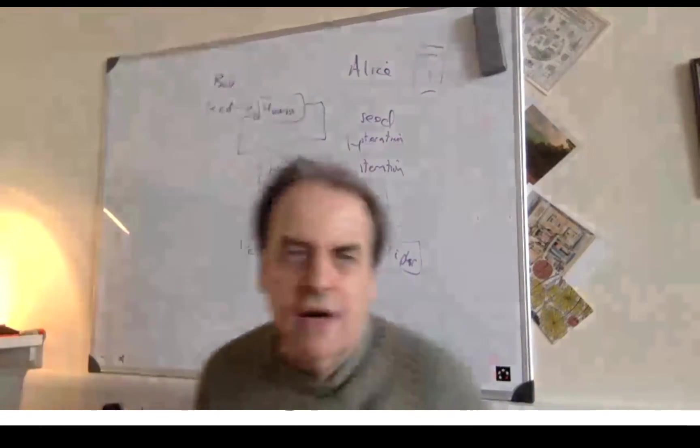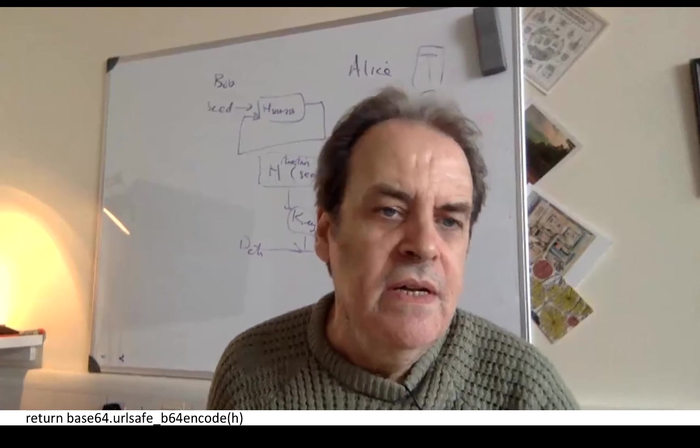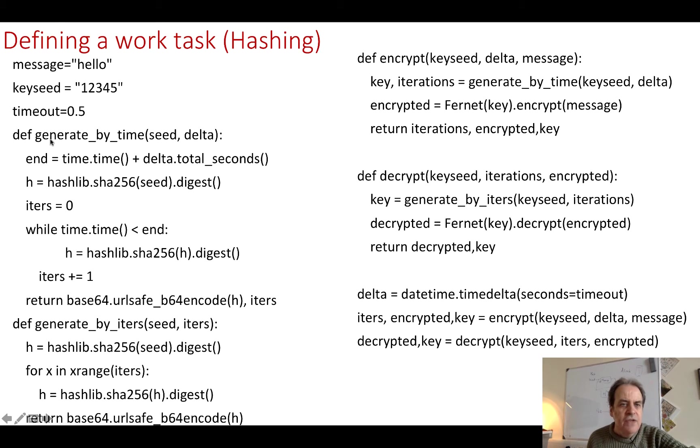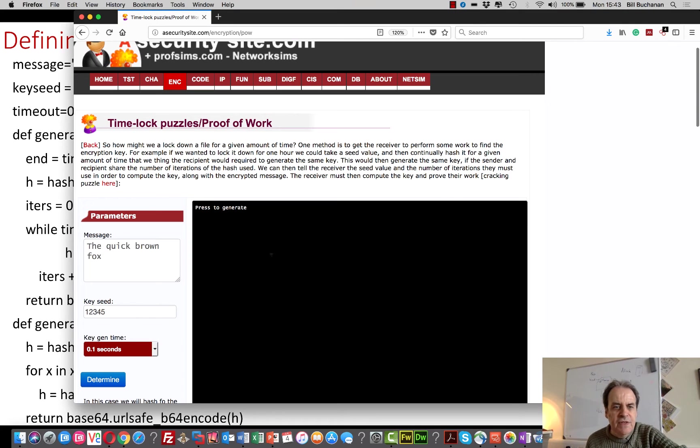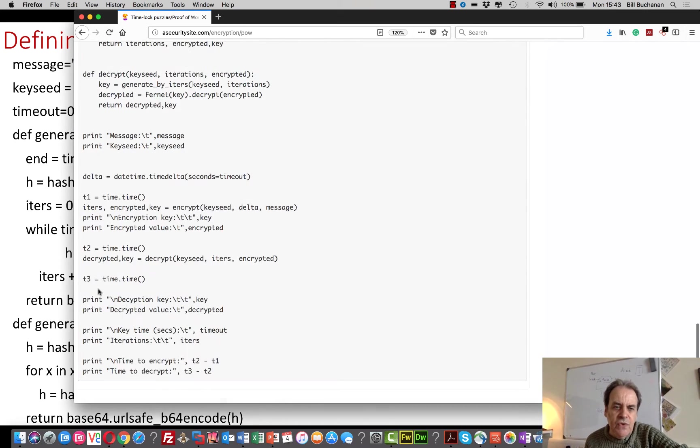That's our hashing method there, and here are some codes to implement this. In this case we derive a certain amount of time and we will generate a hash key by going around the loop until the timer finishes. This way we can actually find out the key and the time it will take Alice to compute the key. Then from there we can encrypt with our key and with our key seed, and on the other side we can decrypt the key using a certain number of iterations. If we look at our web page for this, here's an example here.